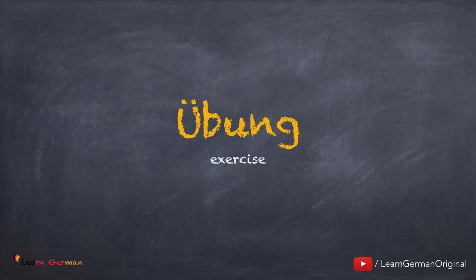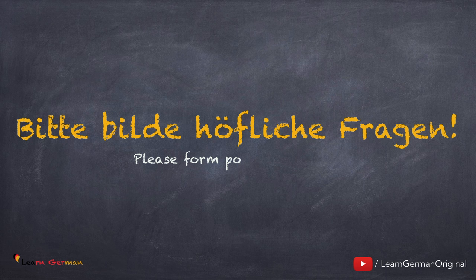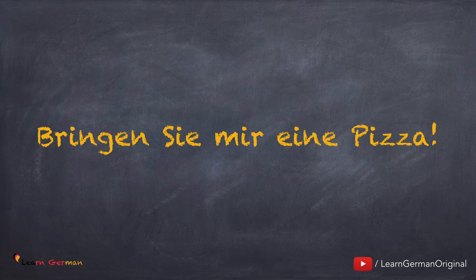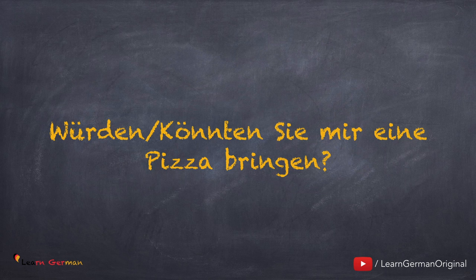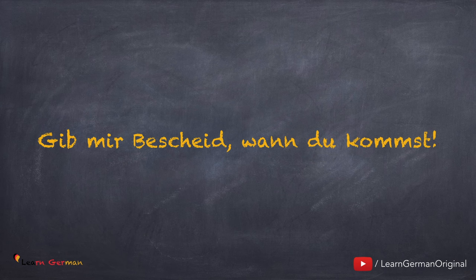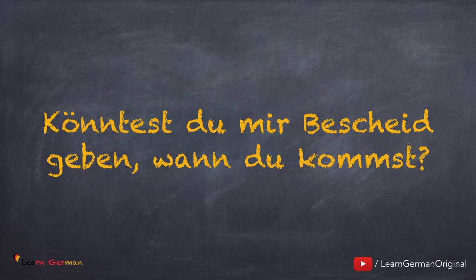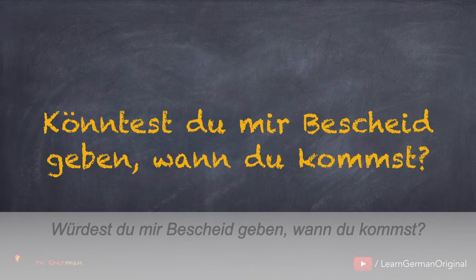So kann man höfliche Bitten formulieren. Jetzt machen wir eine Übung. Was solltest du machen? Du solltest höfliche Fragen bilden. Hier ist der erste Satz. Und die höfliche Bitte ist: Würden Sie mir eine Pizza bringen? Oder: Könnten Sie mir eine Pizza bringen? Hier ist der zweite Satz: Gib mir Bescheid, wann du kommst. Und die höfliche Bitte ist: Könntest du mir Bescheid geben, wann du kommst? Man kann hier auch sagen: Würdest du mir Bescheid geben, wann du kommst?